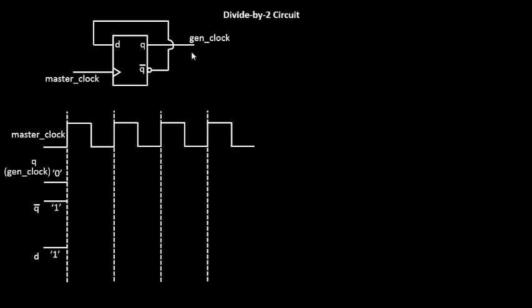The master clock is at the leading edge for 50% and at the trailing edge for 50% of the clock period. For initial conditions, we assume Q is 0, so gen_clock starts at 0. If Q is 0, then Q bar is 1, and since Q bar is fed to D, the D pin is also 1.